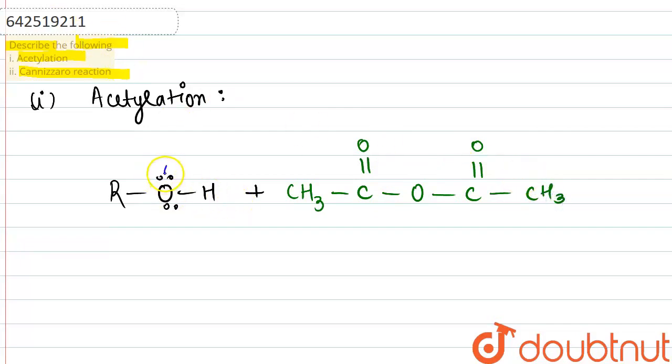Now what happens: since oxygen is having lone pair of electrons, so it will be attacking on the carbonyl carbon, which is electron deficient. And this electron density will be passed on to the oxygen atom.